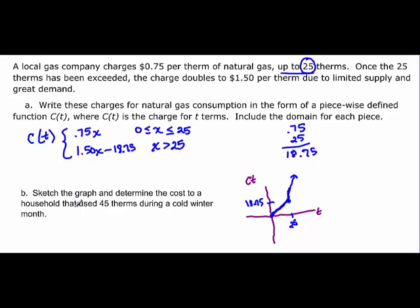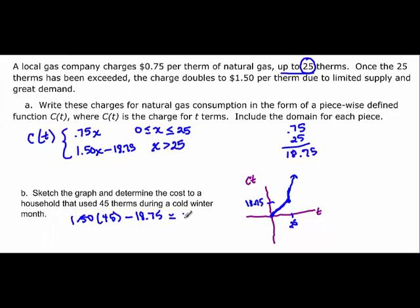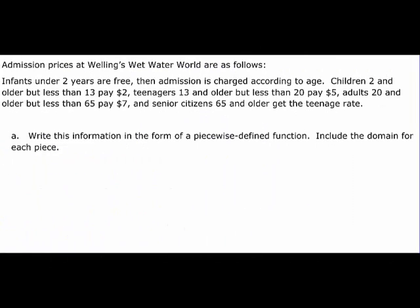And then the last part says find out when it's 45 therms how much it's going to cost. Well that's going to be in the 1.50 times X. So X is 45 and then minus my 18.75. And if I use my calculator again real quick just to do the calculation for me, I can do second window, 45, and then second graph. And it's going to tell me right away that it is going to be the second piece. So it's 48.75. $48.75 for 45 therms.